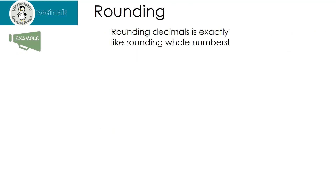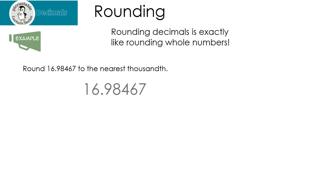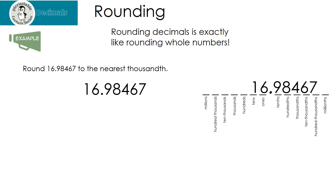Let's try one together. Let's round this number to the nearest thousandths. The first thing I like to do is write my number. For some of you, you may need to write it over your place values, and that's okay. Remember, the first thing we're going to do is underline the thousandths place, because we want to find to the nearest thousandths. So four is my thousandths place.